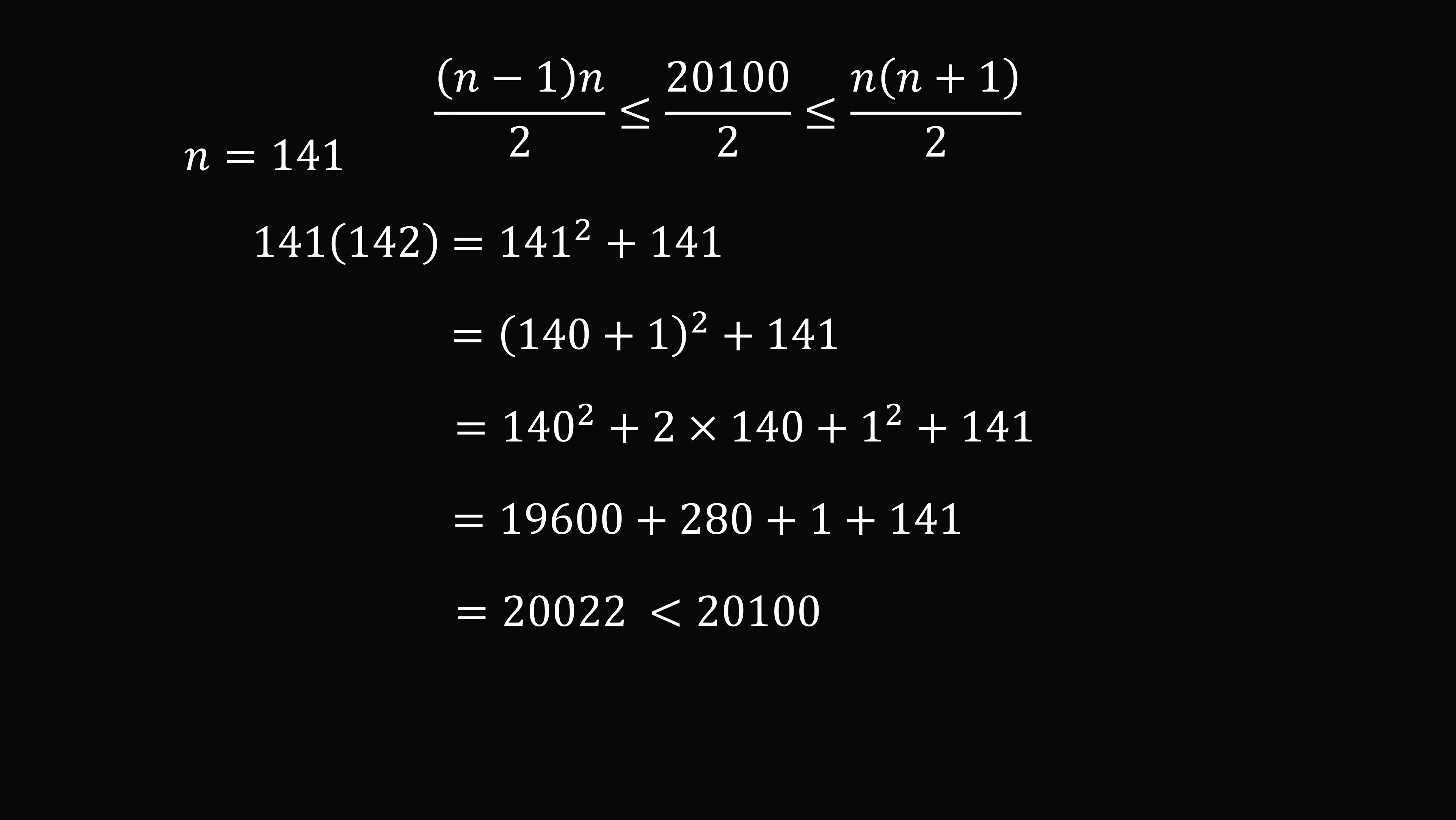But this is smaller than the numerator of 20,100. So if we take all the numbers going up to 141, it's still too little. We haven't reached the median value yet. So we are going to need the next number, which is 142.